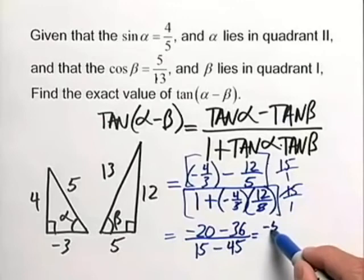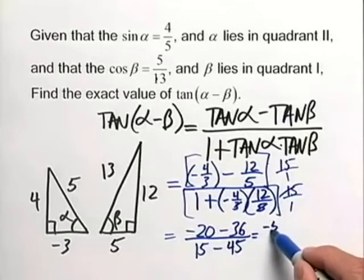When we simplify this, we end up with a negative fifty-six on the top, all over a negative thirty-three on the bottom, and if possible, reduce this. No such luck here, but we'll want to write that as a positive fifty-six thirty-thirds, and this completes our problem.